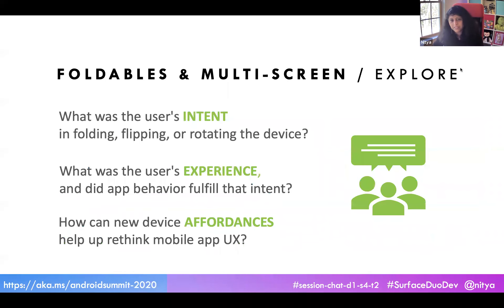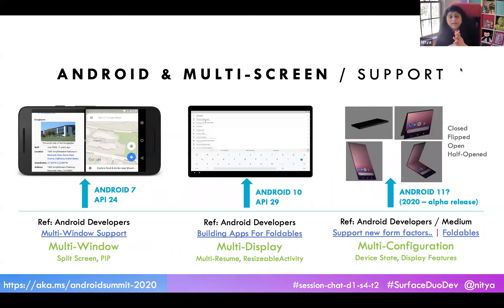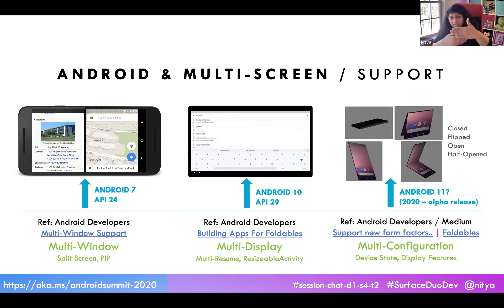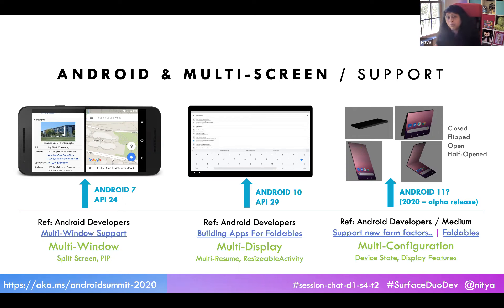Looking specifically at multi-screen, Android has evolved considerably. Way before 2018, in Android 7, we had the first nuance of concurrent visible activities on screen — multi-window — where you could have one or more different views the user could look at, but only one would be resumed and active at any given point. You had split screen, picture-in-picture modes.